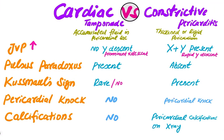In cardiac tamponade, there is accumulation of fluid in the pericardial sac. In constrictive pericarditis, the pericardium becomes thickened and rigid. JVP is raised in both cardiac tamponade and constrictive pericarditis, but in cardiac tamponade there is no...